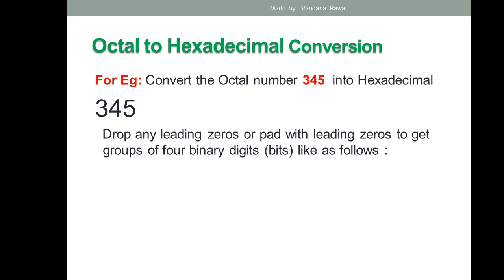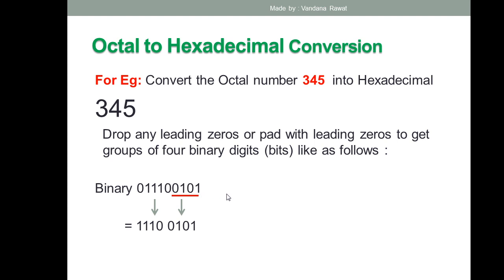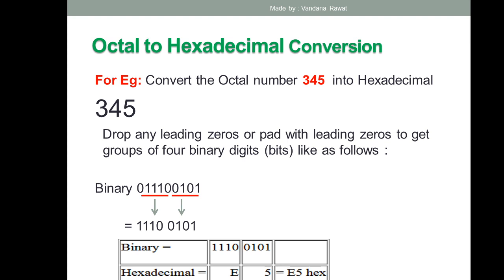Now for step two, make groups of four bits starting from the LSB (right side). If needed, pad with leading zeros on the MSB side to complete a group of four. For 011100101, grouping from the right gives 1110 and 0101. Checking the binary-to-hexadecimal table: 0101 is 5 and 1110 is E. So octal 345 converts to hexadecimal E5.